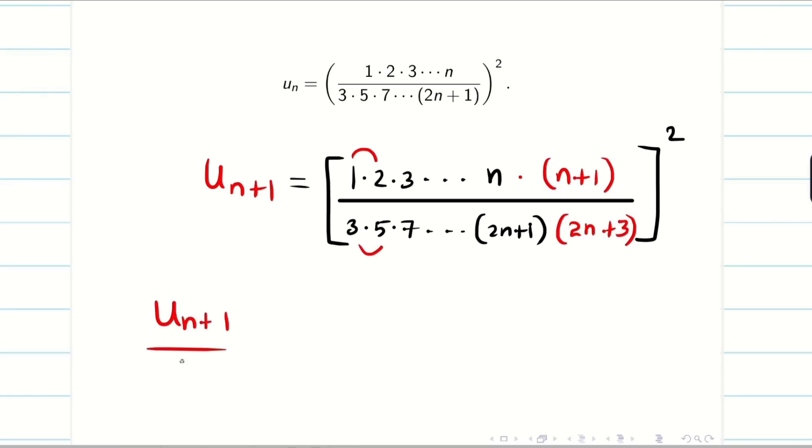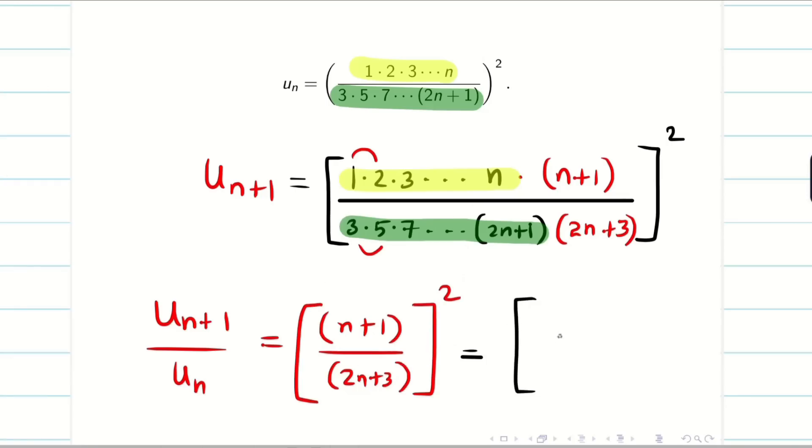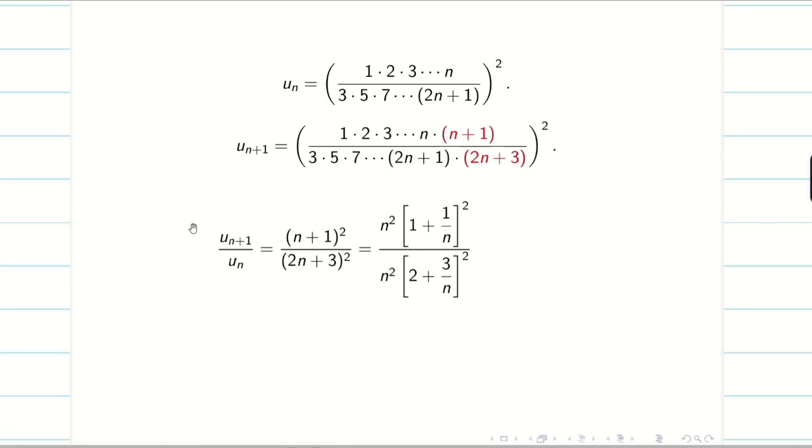Because when I perform un plus 1 by un, I can see this: 1 to n will cancel with this. And then this 3, 5, 7 up to 2n plus 1 will cancel with this. So only (n plus 1) divided by (2n plus 3) terms will survive. It has whole square. That is the beauty of ratio test. Now I will take n in common. Both from numerator and denominator will be getting (1 + 1/n)² divided by (2 + 3/n)². Now I can cancel n and n. Now we have to apply the limit. You can see the typed version.